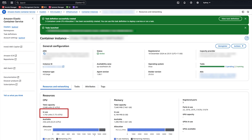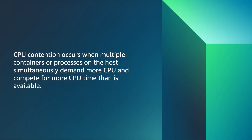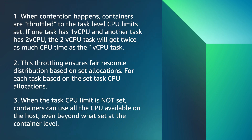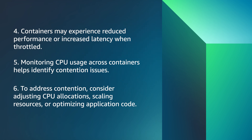Check the CPU units in use. You will see that 1792 CPU units are in use, or 1.75 vCPU. CPU contention occurs when multiple containers or processes on the host simultaneously demand CPU and compete for more CPU time than is available. When contention happens, containers are throttled to the task-level CPU limits set. If one task has 1 vCPU and another has 2 vCPU, the 2 vCPU task will get twice as much CPU time as the 1 vCPU task. This throttling ensures fair resource distribution based on set CPU allocations for each task. When the task CPU limit is not set, containers can use all the CPU available on the host, even beyond what is set at the container level. Containers may experience reduced performance or increased latency when throttled. Monitoring CPU usage across containers helps identify contention issues. To address contention, consider adjusting CPU allocations, scaling resources, or optimizing application code.